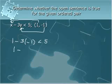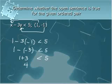So I will have 1 minus negative 3. And 1 minus negative 3 will be 1 plus 3, which is 4. So I will compare this to my 5. Is 4 less than 5? Yes. So this is a true statement, and this ordered pair makes our open sentence true.